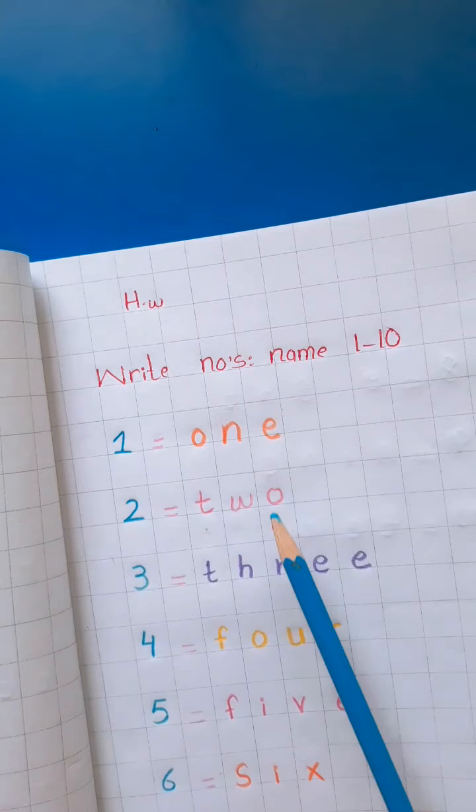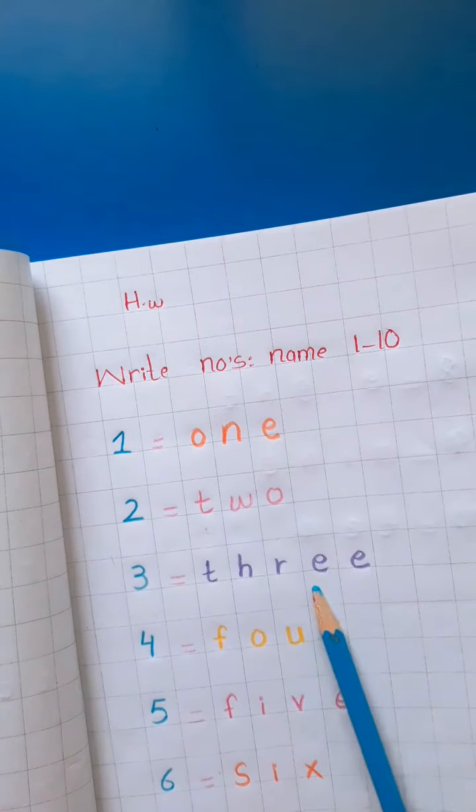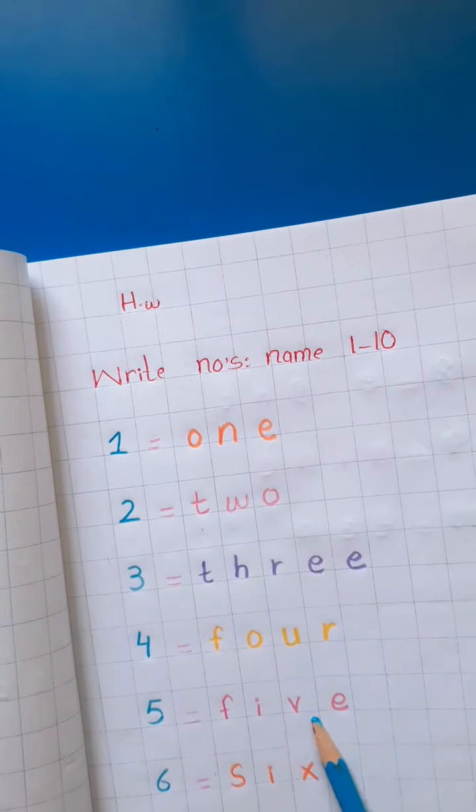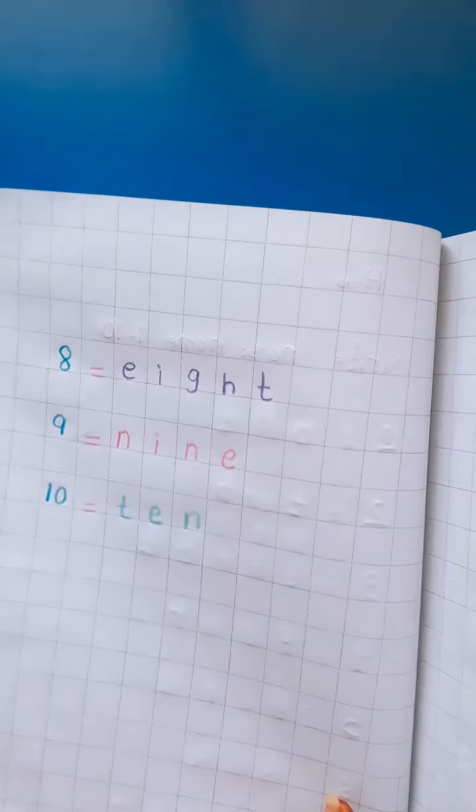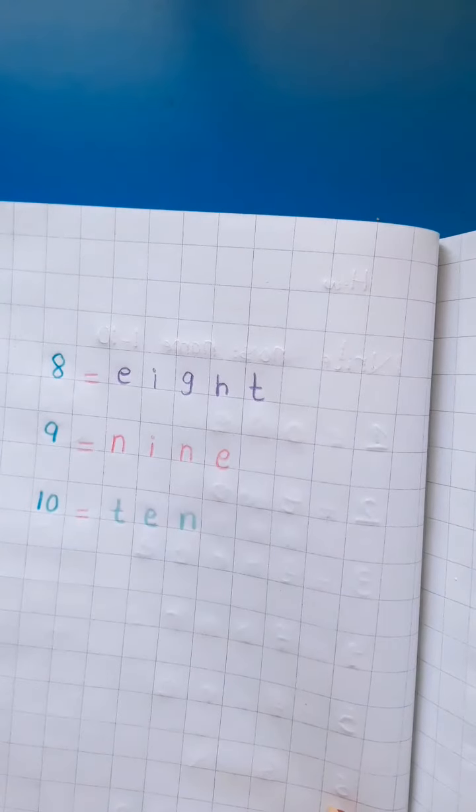One, two, three, four, five, six, seven. What comes after seven? Eight, nine, ten.